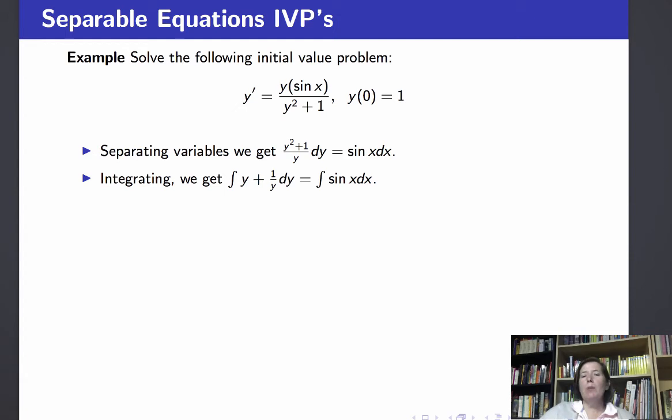Now integrating both sides, it's easier if we write y squared plus 1 as y plus 1 over y, and we get that the integral on the left is y squared over 2 plus the natural log of the absolute value of y. And of course integrating on the right we get minus cosine of x plus c.